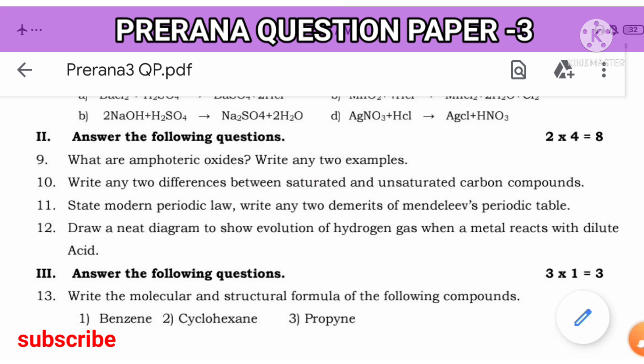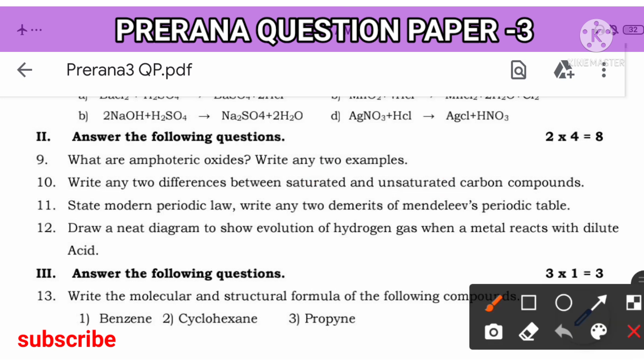Next, I have told you about laws, here also you should remember the laws. Modern periodic law states: the properties of the elements are the periodic functions of their atomic number. Write any two demerits. Demerits is nothing but the disadvantages. Write any two demerits of the Mendeleev's periodic table. Not modern periodic table.